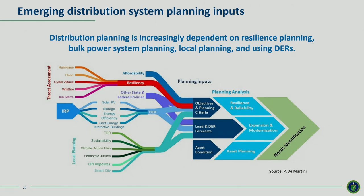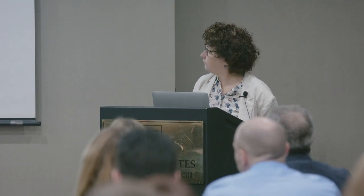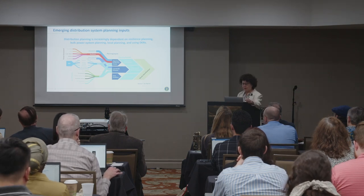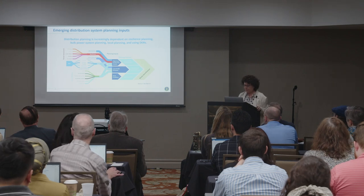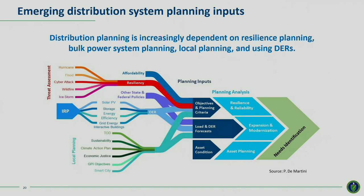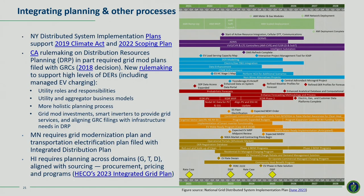Distribution planning is increasingly dependent on resilience planning, bulk power system planning, and local planning — many cities and counties have sustainability, climate change, and resilience plans. There's also a lot of interaction with other infrastructure, such as water and wastewater. On the bulk power system side, integrated resource plans should account for resources connected to the distribution system — solar, storage, and active buildings. All of this points toward better coordination across planning processes, and states are increasingly requiring utilities to coordinate across these processes.